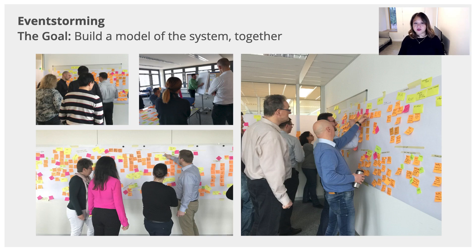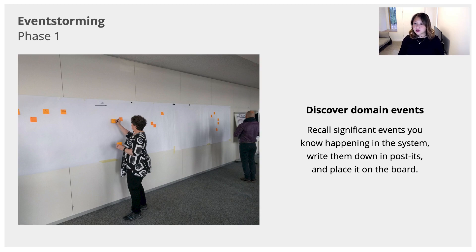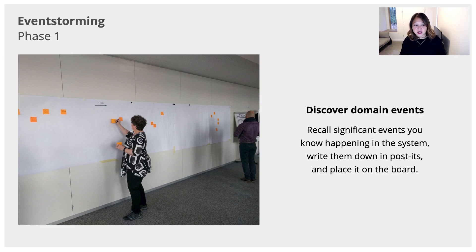There are five different phases to event storming. The first one is really about discovering domain events. Everyone in the room should be recalling the significant events that have happened in the system. An event is a simple fact that happens in our process. These are normally on orange sticky notes, and all of it should be in past tense verbiage. They should all be relevant for the domain experts in the room, so everyone picks up an orange sticky and starts writing the events.